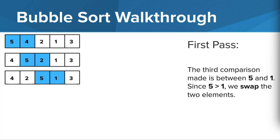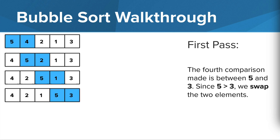Next, we compare 5 and 1, and since 5 is greater than 1, we swap those two elements. And then lastly, we compare 5 and 3, and since 5 is greater than 3, we swap those two elements. And so on the first pass, we end with the array 4, 2, 1, 3, 5. And so far, what we have successfully done is identified the largest number in the array and moved it all the way to the end.